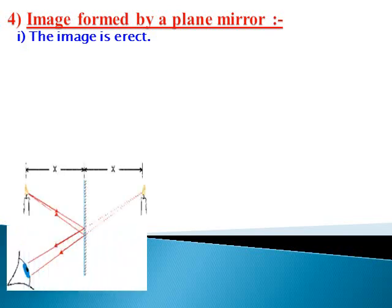When you stand in front of a mirror, have you ever noticed the image formed by a plane mirror? If your answer is no, then notice today. You will find out that the image formed by a plane mirror is erect. It means if the head of the object is upside, then the head of the image is also upside in the mirror.